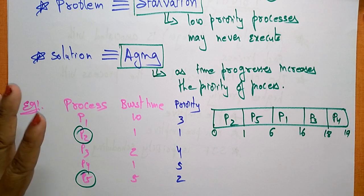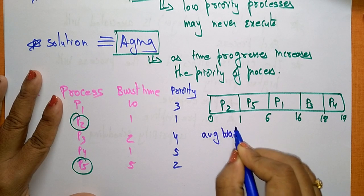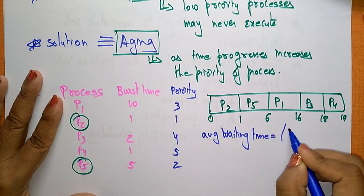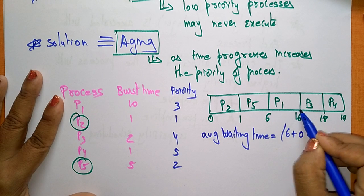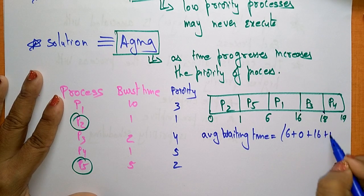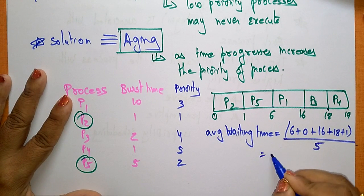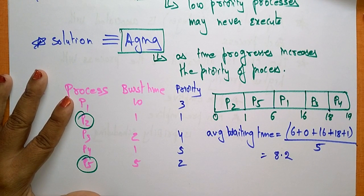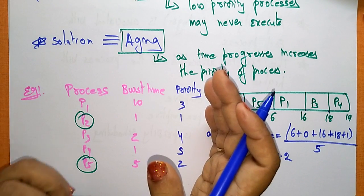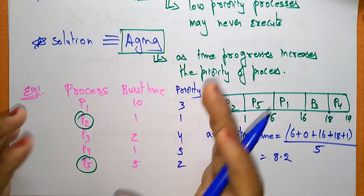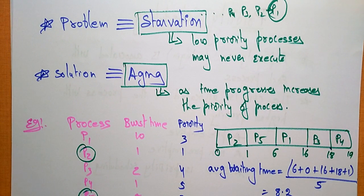Now let us calculate the average waiting time. P1 waits 6, P2 waits 0, P3 waits 16, P4 waits 18, and P5 waits 1. Average waiting time = (6 + 0 + 16 + 18 + 1) / 5 = 8.2. The only major drawback of priority scheduling is starvation of low priority processes. That concludes the priority scheduling algorithm.